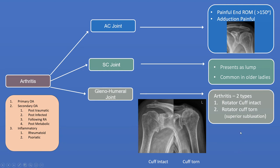The most significant arthritis in the shoulder is glenohumeral joint arthritis — a wearing away of the humeral head on the articular surface of the glenoid with associated pain. All types of arthritis can be divided into three main groups: primary arthritis where the joint just wears away — wear and tear; secondary arthritis which wears quicker secondary to other causes — either post-traumatic, post-infected, following rheumatoid or other inflammatory arthritis, or post-metabolic; and inflammatory arthritis, which the rheumatologist will tell you about — rheumatoid being the most common, but also psoriatic and a myriad of other types.